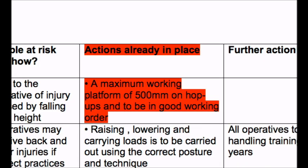Column 3 lists the control measures, which are the actions already in place to limit or prevent risk. In this case the operative is only allowed to use a hop-up in good condition with a maximum working height of 500mm. In effect, this means that should the operative not adhere to the correct working practices, it is his own liability. So if an operative balances on a tin of paint to gain some extra height and the tin tips over, covering the carpet in paint and causing injury to the operative, it's his own fault.